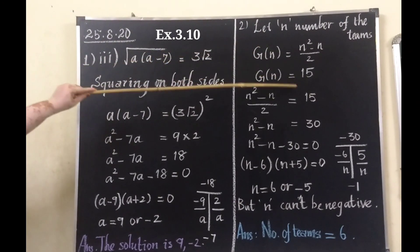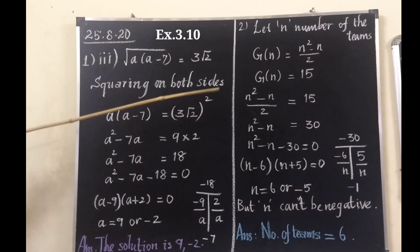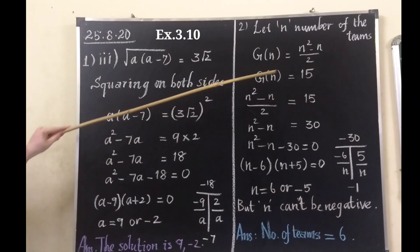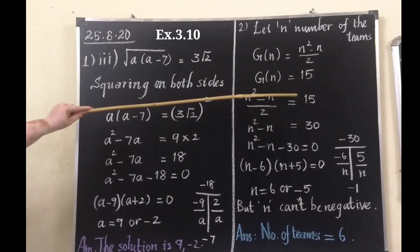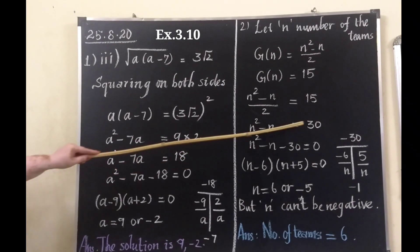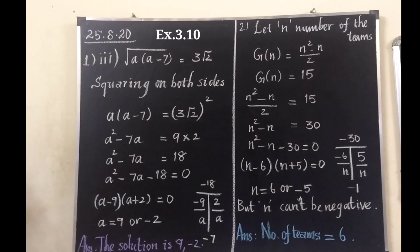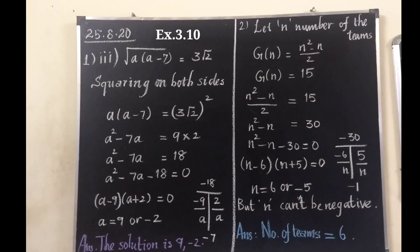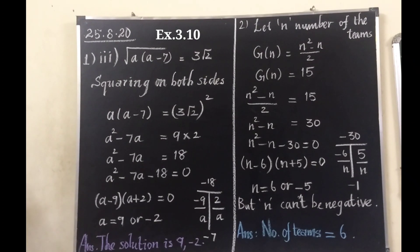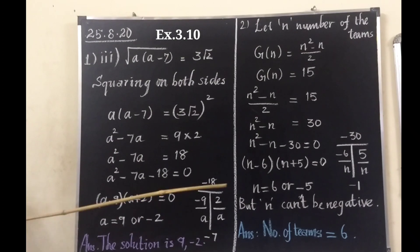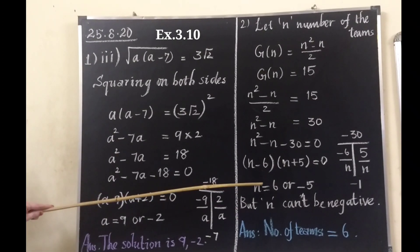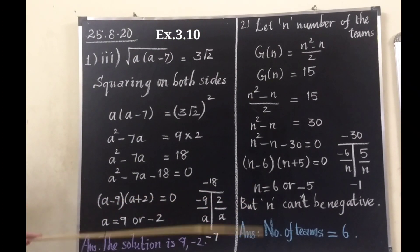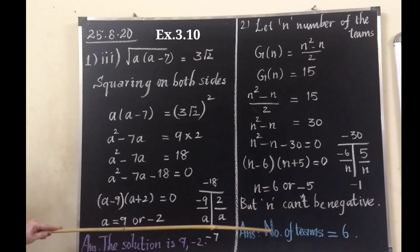Since g(n) is given as 15, we set n squared minus n by 2 equals 15, making it a quadratic equation. Multiplying: n squared minus n minus 30 equals 0. We factorize: (n minus 6)(n plus 5) equals 0, giving n equals 6 or n equals minus 5. Here n is the number of teams, so the number of teams cannot be negative. Therefore n equals 6 is the answer — the number of teams is 6.